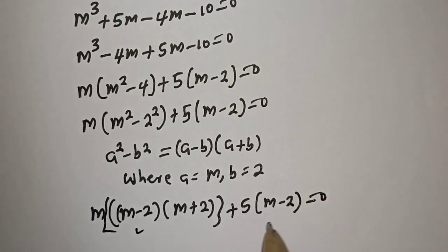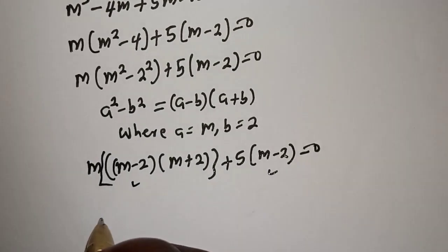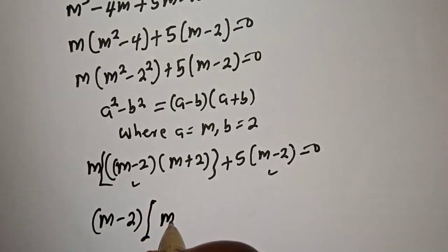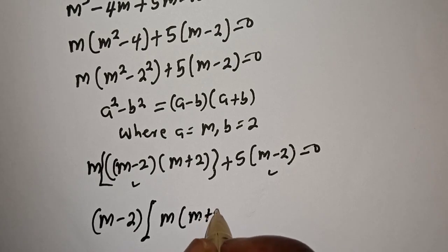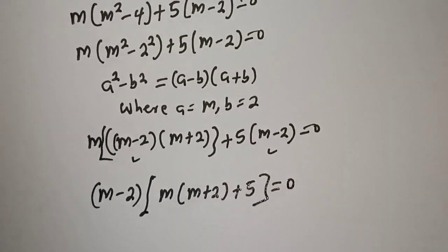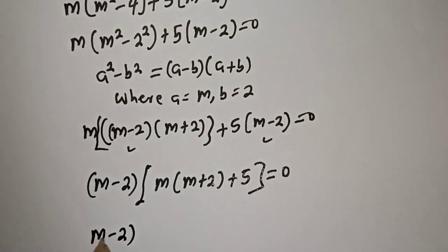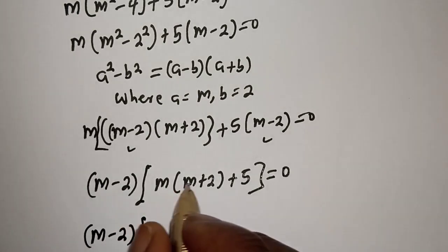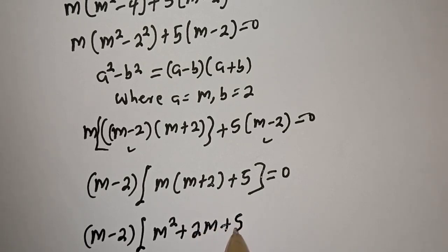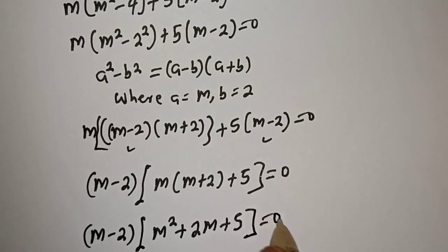But m minus 2 is common here. Let's bring it out. m minus 2 multiplied by m bracket m plus 2 plus 5 is equal to 0. That is, m minus 2 multiplied by m squared plus 2m plus 5 is equal to 0.